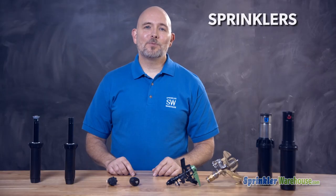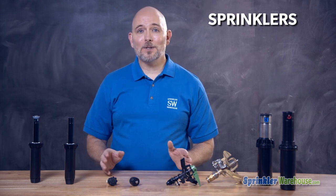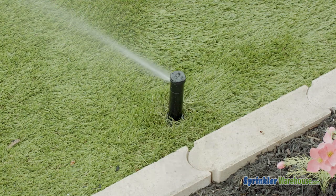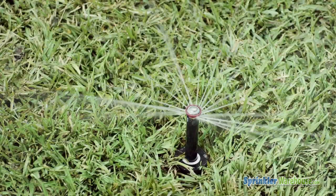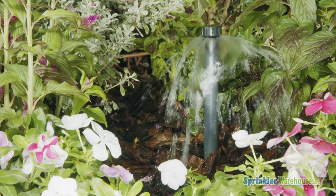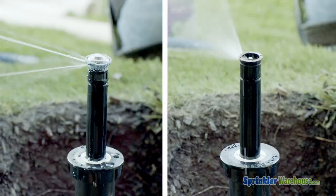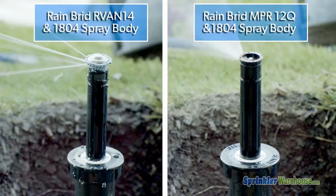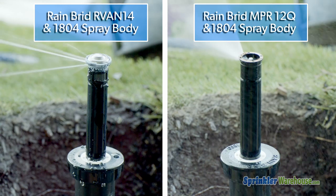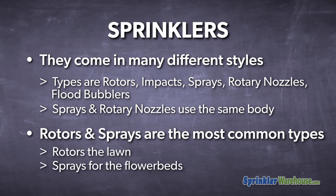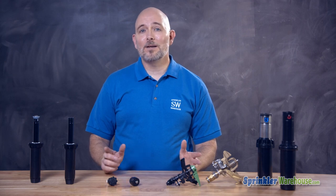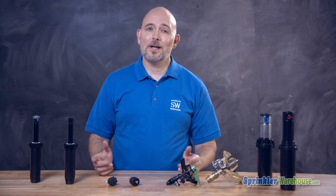Sprinklers are the objects that spray water onto the landscape. They come in many different styles. Rotors, impacts, sprays, rotary nozzles, and bubblers are the most common types. Notice that sprays and rotary nozzles use the same body — there are just different nozzles. Rotors and sprays are the most frequent. Most landscapes will have rotors watering the lawn and sprays in the flower beds. The types of sprinklers chosen will depend on the needs of the landscape, the water pressure, and the flow available.